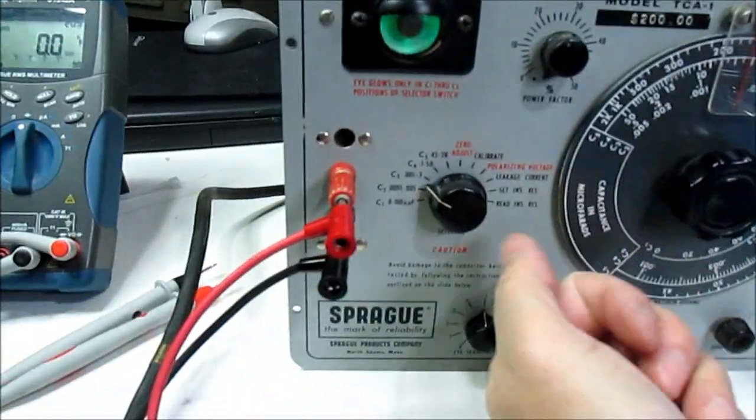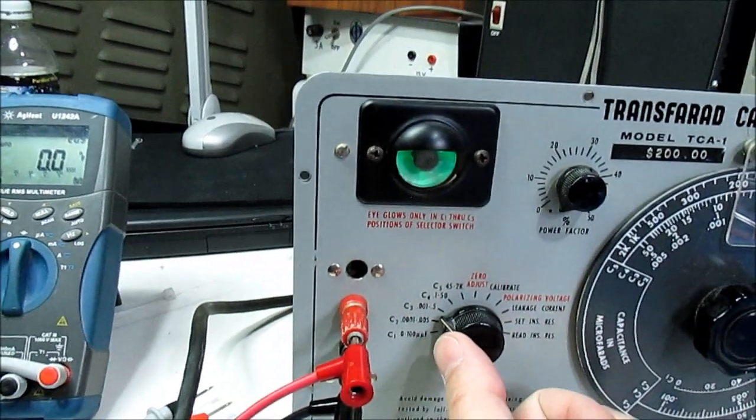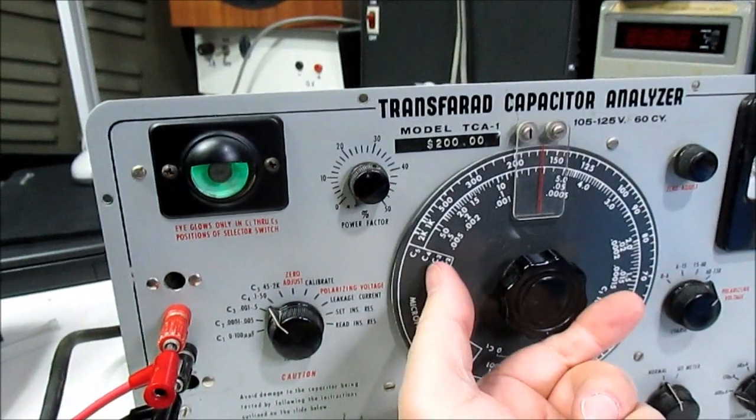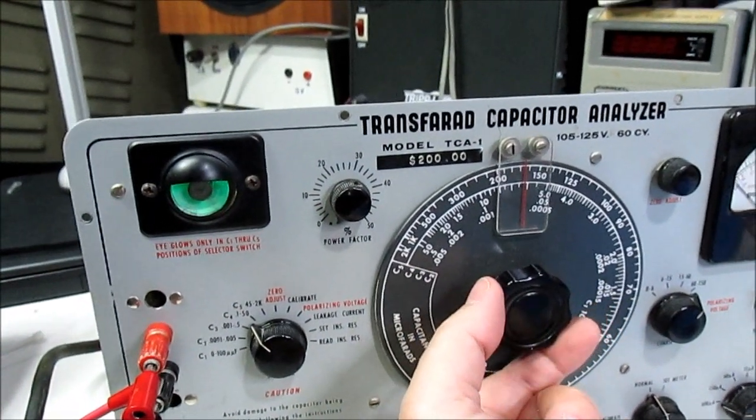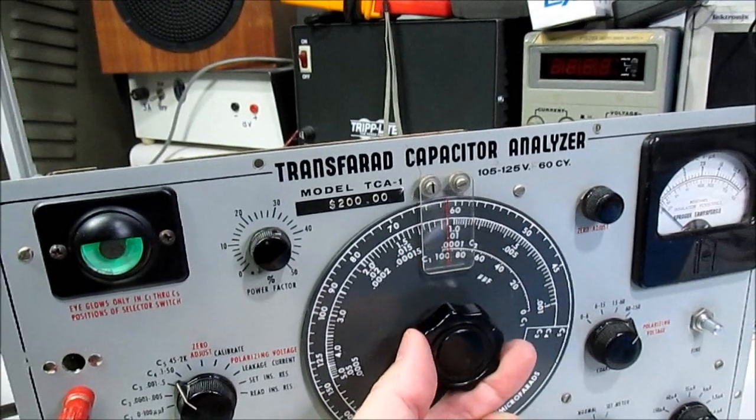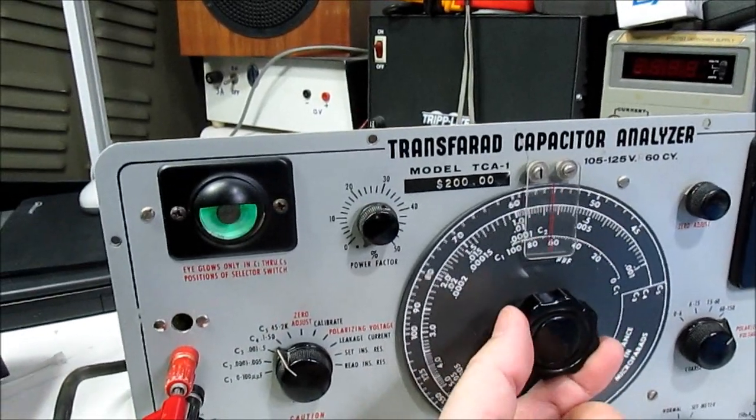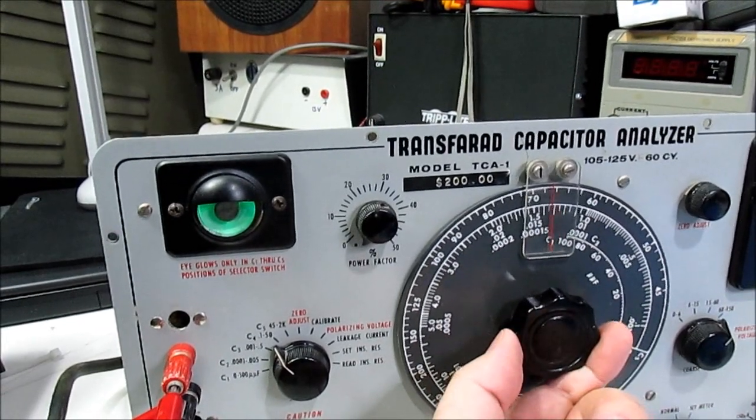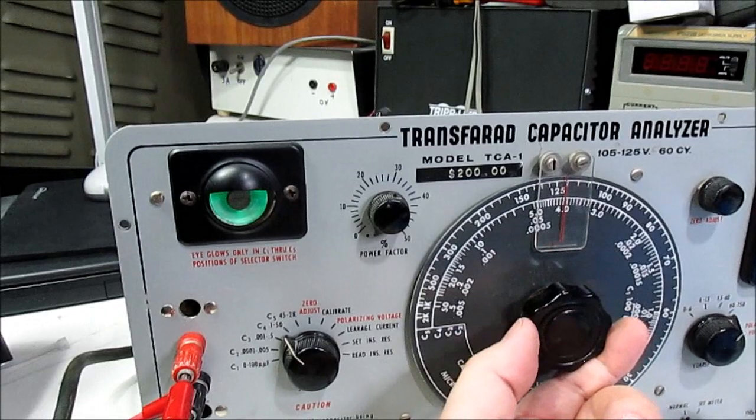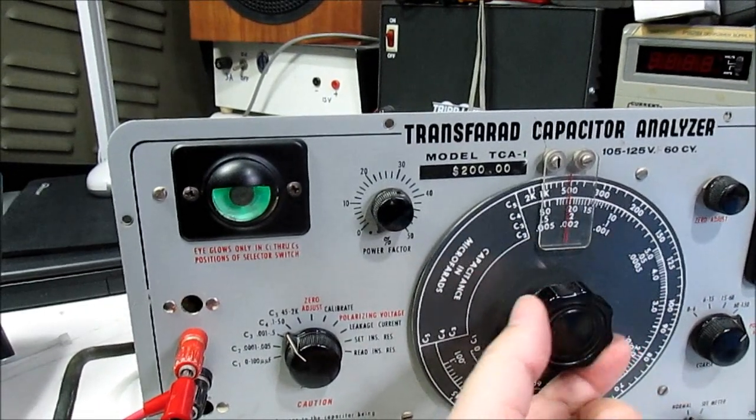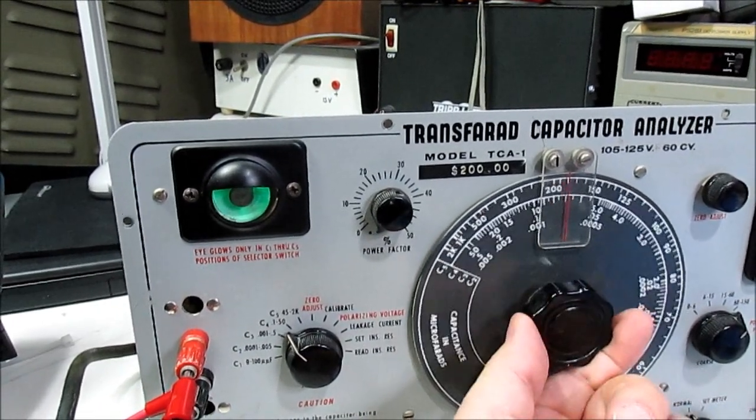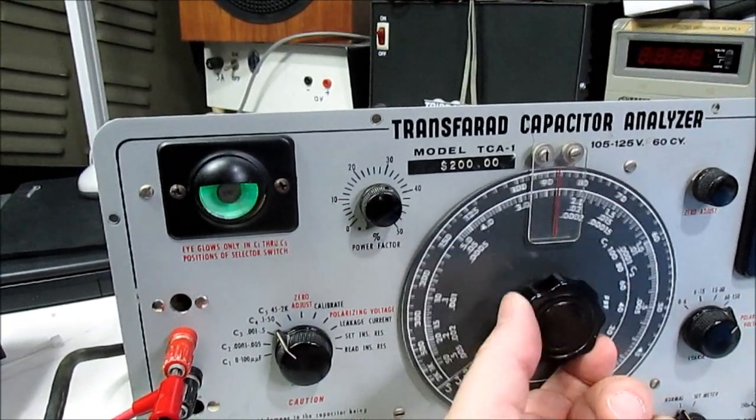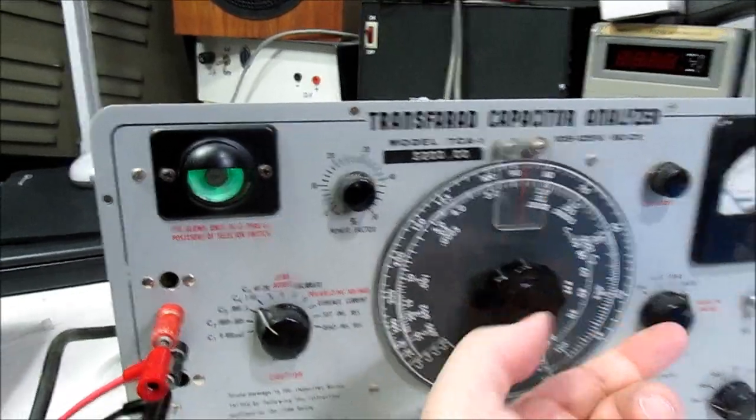For a 1.0, it needs to be in the .1 to .50 scale, which would be here on C4. So one is about there on this dial. I'm not seeing anything on this eye tube that looks like anything's happening.